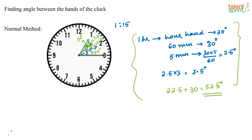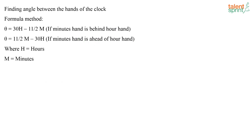There is a formula you can memorize to solve these questions easily. The angle θ between the hands of the clock is given by θ = 30H − 11/2·M, or θ = 11/2·M − 30H, where H represents the hours and M represents the minutes. When the minute hand is behind the hour hand, use the first formula. When the minute hand is ahead of the hour hand, use the second formula.